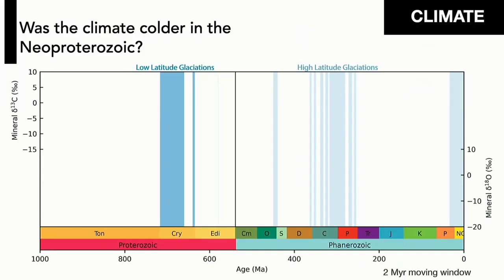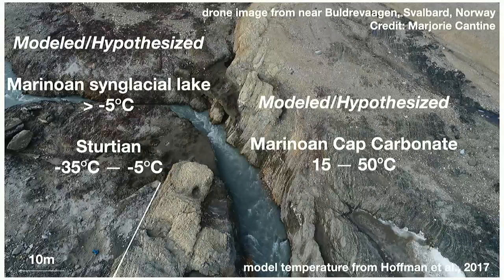We can start with the physical record of climate, which might suggest the Neoproterozoic was colder as a whole. In the Neoproterozoic, we preserve two low-latitude glaciations where we have glacial carbonate at the equator — very different from Phanerozoic glacial deposits which extend to 30 degrees paleolatitude. To get glacial deposits at the equator, modeling studies have predicted some pretty extreme temperature ranges from minus 35 all the way to 50 degrees following the glaciation. So really asking what temperature these early complex organisms were experiencing is critical.